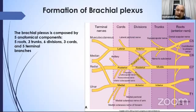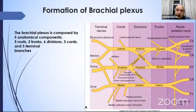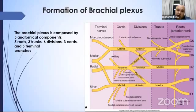Each trunk gives an anterior and posterior division. All posterior divisions from the three trunks form the posterior cord. The anterior division of the superior and middle trunk form the lateral cord, and the anterior division of the inferior trunk forms the medial cord. The lateral cord gives the musculocutaneous nerve and contributes to the median nerve; the posterior cord gives the axillary and radial nerve; the medial cord gives the ulnar nerve and another contribution to the median nerve.